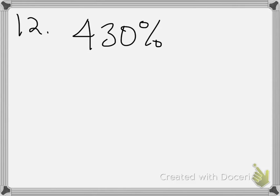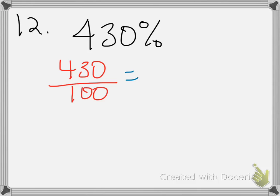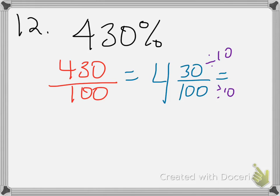For number 12, the directions say 'write each percent as a fraction or mixed number in simplest form.' So 430% literally means 430 per 100. Some of you left it there, but that's not simplified. The bigger number is on top, so you have whole numbers: 100+100+100+100 = 400, leaving 30 over 100. Then divide the fractional part by 10: 30/100 simplifies to 3/10. Your final answer is 4 and 3 tenths.